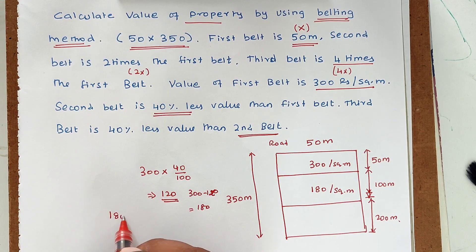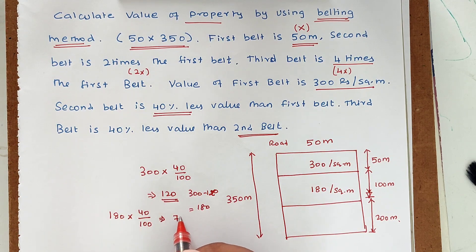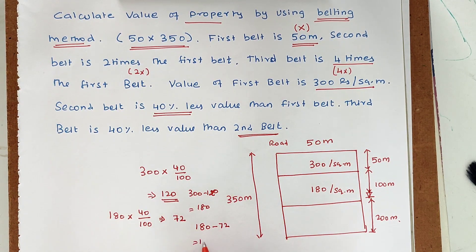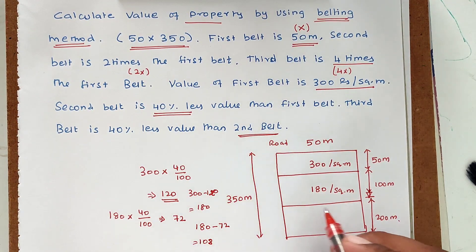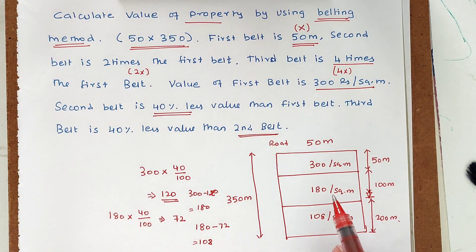The third belt is 40% less than the second belt: 180 into 40 divided by 100 equals 72. So 180 minus 72 equals 108 rupees per square meter — that is the value of the third belt.